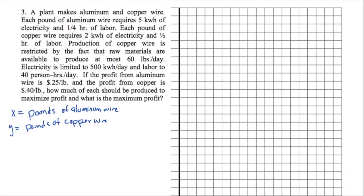Alright, so let's kind of key in on some of the important elements in this one. We've got information throughout this problem about electricity. It takes five kilowatt-hours to make the aluminum and two kilowatt-hours to make the copper. And we're limited to 500 kilowatt-hours in a day. Also, we know that the labor for the aluminum is a quarter of an hour of labor, and the copper is a half hour of labor. But we're restricted to 40 hours of labor in a day. Now, there's also a sneaky extra bit in here about the materials. We're limited to 60 pounds in a day of the copper wire. So we'll also have to keep that in mind.